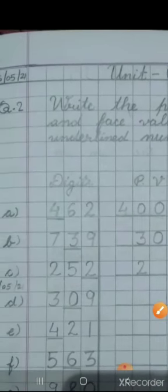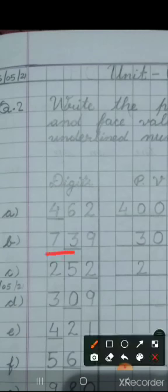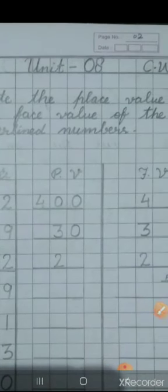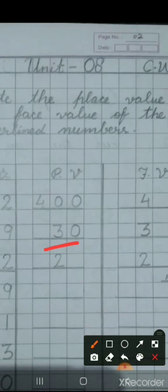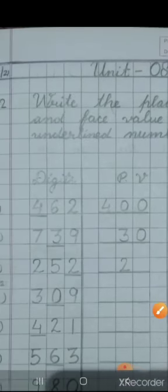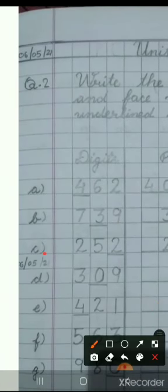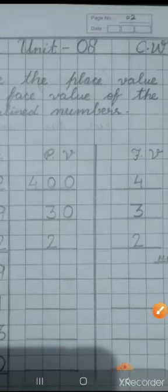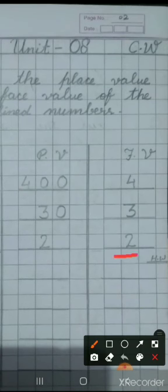On number B, you can see, the number is given 739 and 3 is underlined, which is at 10th place. So, its place value will be 30 and its face value will be 3. Number C, you can see, the number is given 252. So, its place value will be 2 and its face value also will be 2.